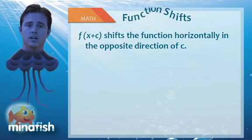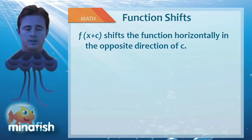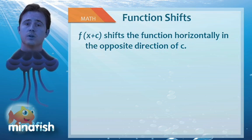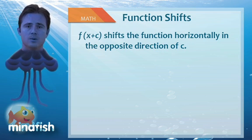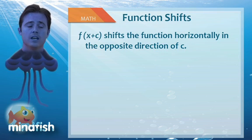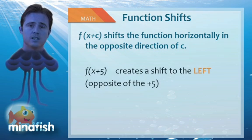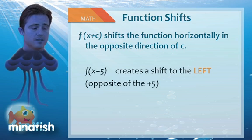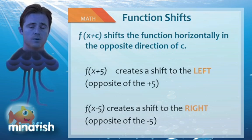Function shifts are another important topic dealing with f of x. You need to understand how a function shifts when you make changes to it. When you add a number inside of the function — say f of x plus c — it goes in the opposite direction of c. So f of x plus 5 moves 5 units to the left, whereas f of x minus 5 is 5 units to the right. Remember, it's an opposite movement.